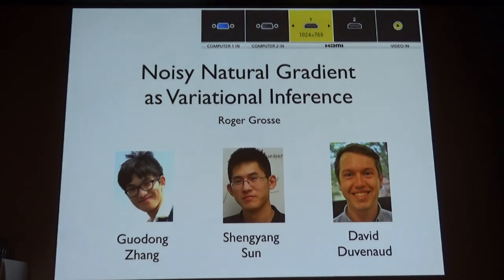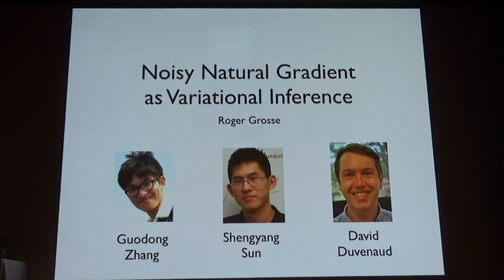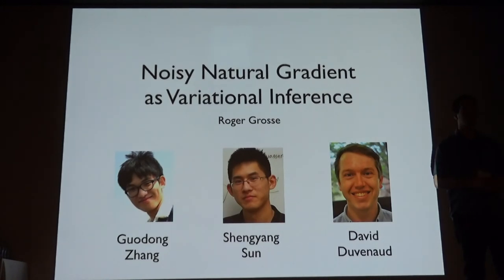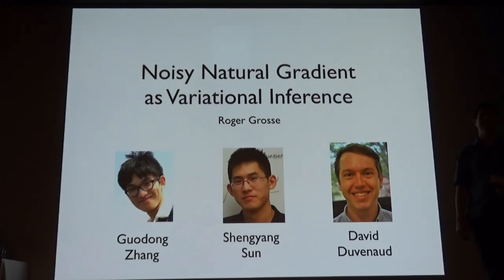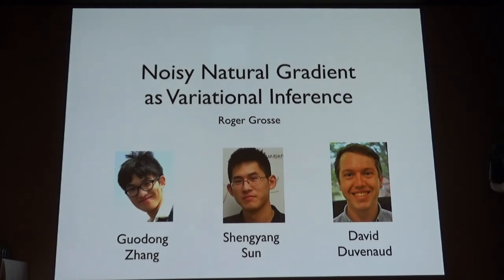I'm talking about a way of training Bayesian neural nets called Noisy Natural Gradient. This talk isn't directly about RL, but it's a way of getting better uncertainty estimation, which, as you've seen in previous talks today, could be a very useful tool for exploring more efficiently in RL. This work is primarily the work of two amazing first-year students, Guodong Zhang and Sheng Yang Sun, also in collaboration with Dave Duvenau.